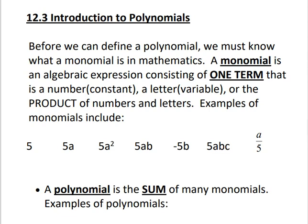Some examples of monomials include 5, 5a, 5a squared, 5ab — so that's three different things: 5, a, and b all being multiplied — and negative 5b, 5abc, or even a divided by 5. This can be considered a product because it could also be written as one-fifth times a. These are monomials because you don't see any pluses or minuses in between the terms.